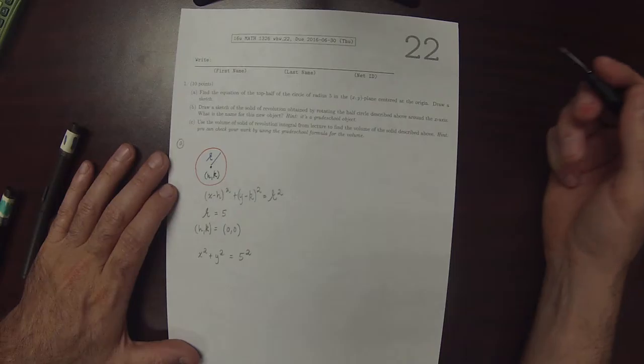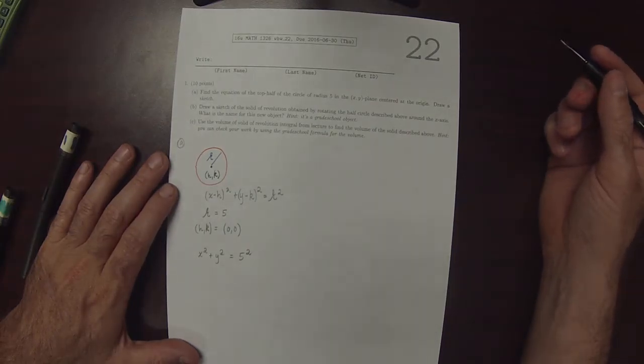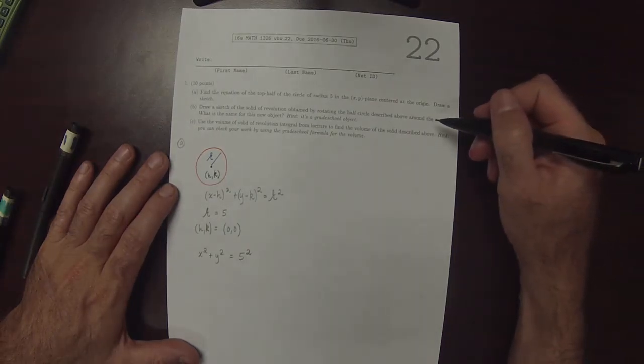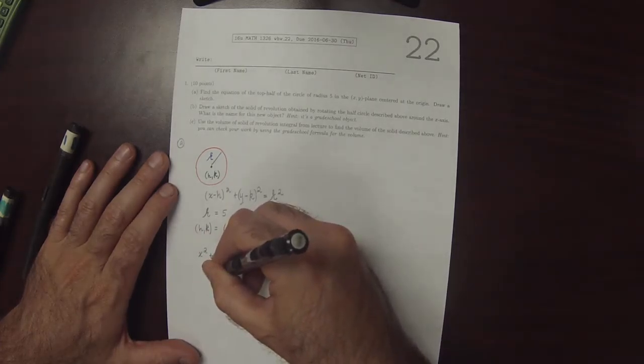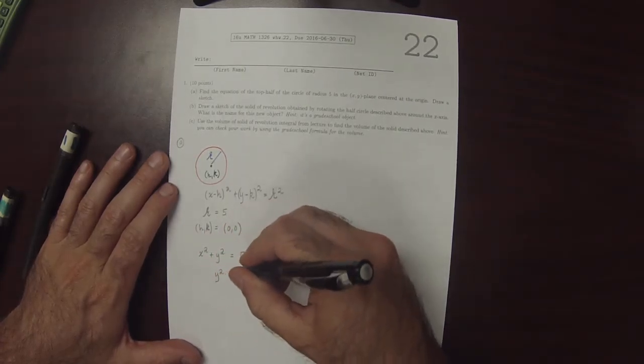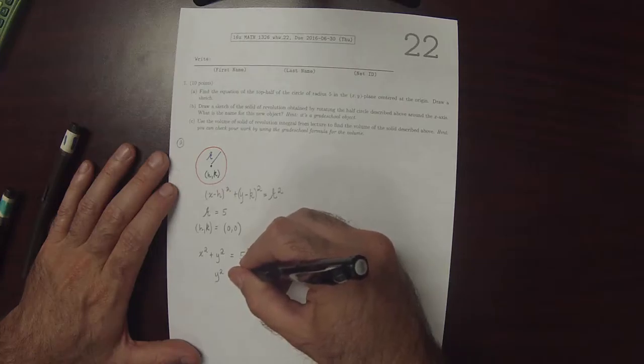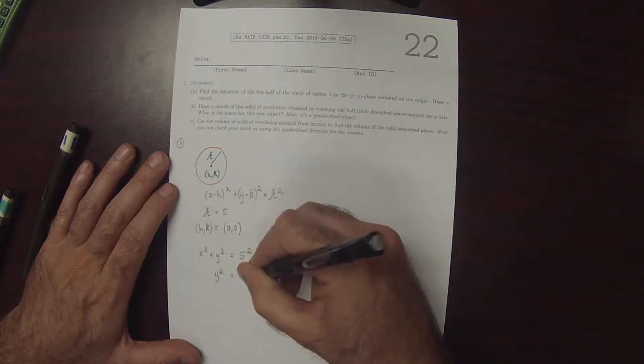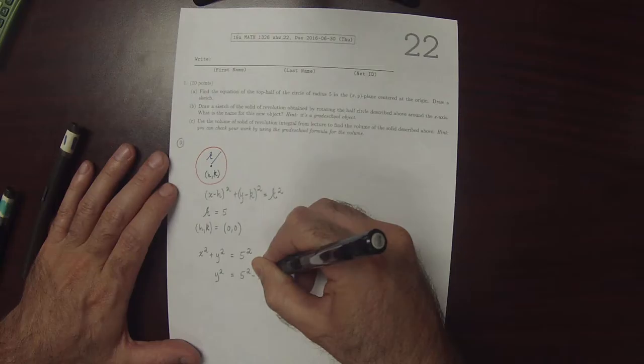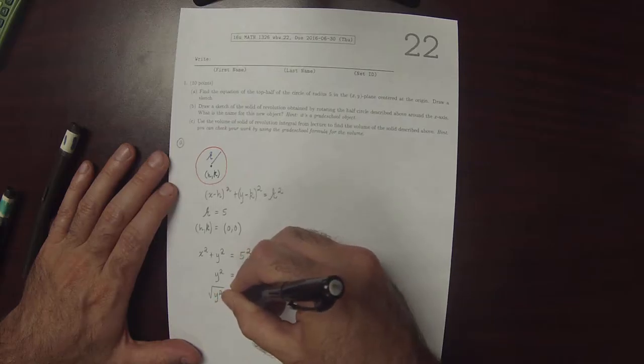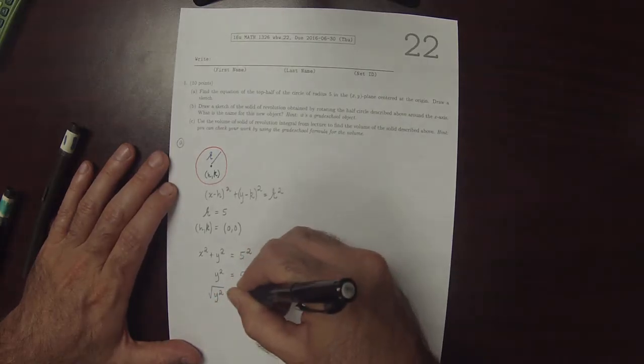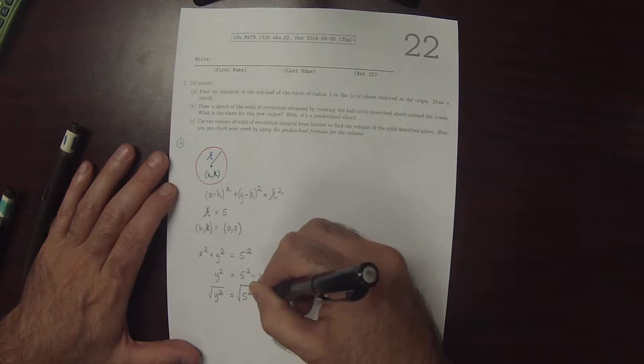So that's the entire circle. However, we are requested to find just the top half. That means to solve for y. So y squared is 5 squared minus x squared, and then the square root of y squared is the square root of 5 squared minus x squared.